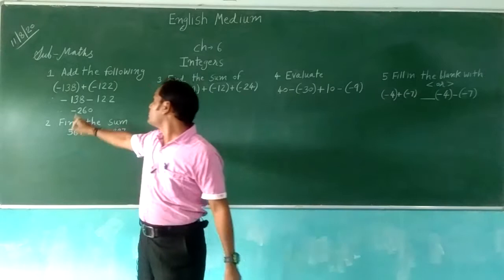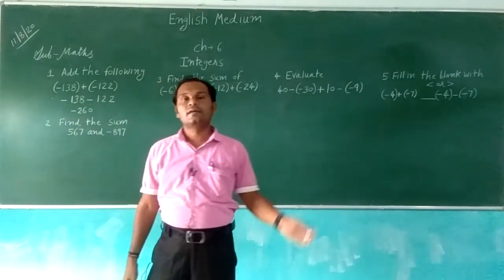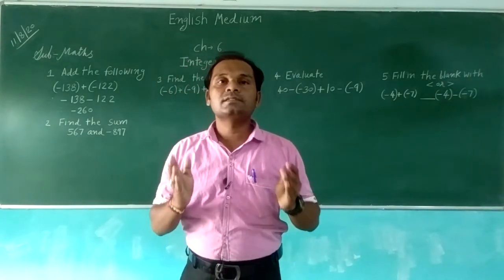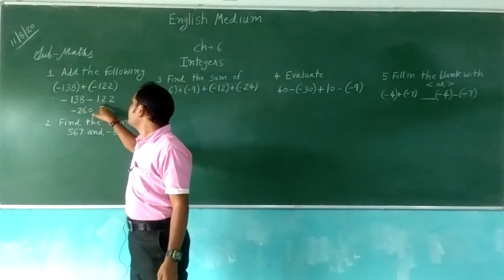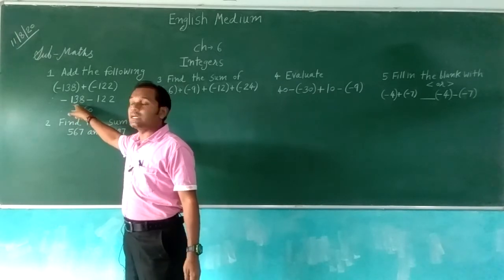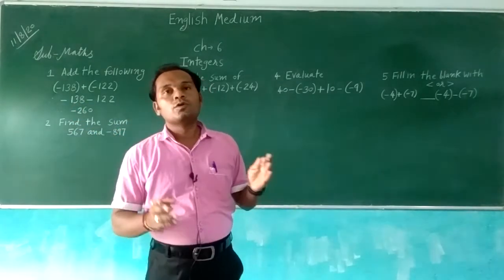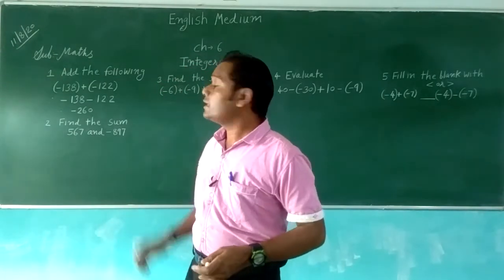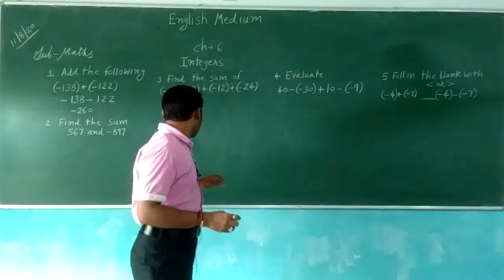Both numbers are minus: minus 138 and minus 122, both minus. So minus minus gives plus — we add both numbers, and the sign of the answer will be according to the greater number's sign. So we apply the greater number's sign in the answer: minus 260.